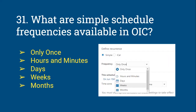As you can see in the screenshot from OIC, when you select Simple, a frequency dropdown appears. From that dropdown you can select: Only Once, Hours and Minutes, Days, Weeks, or Months. You can also use a combination of all these options to schedule an integration.